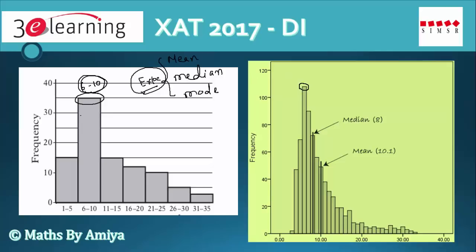We can find the expected median and expected mode, and even the expected mean. So the median value of 8 is nothing but the expected median. The mean of 10.1 is nothing but the expected mean — not the exact mean, since we do not have the exact data. To summarize: we can find the modal range and expected values, but not the exact ones.